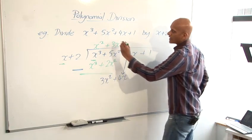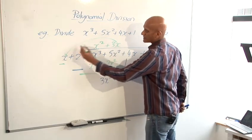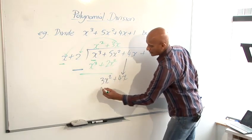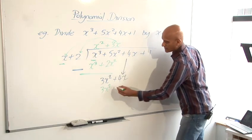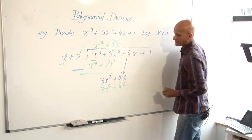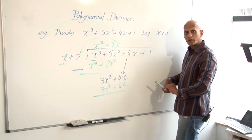And then I multiply this out into there. So 3x times x is going to give me 3x squared. And 3x times 2 is going to give me plus 6x. And again, put a line underneath that.